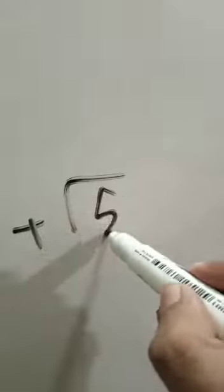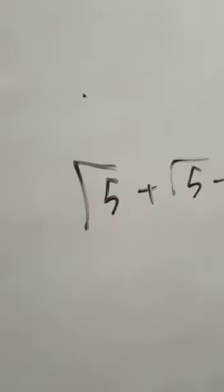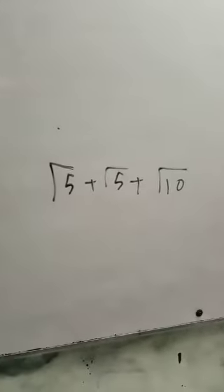This is root 5 and root 5. So, if you add them up, root 5 plus root 5 plus root 10, so 2 root 5 plus root 10.